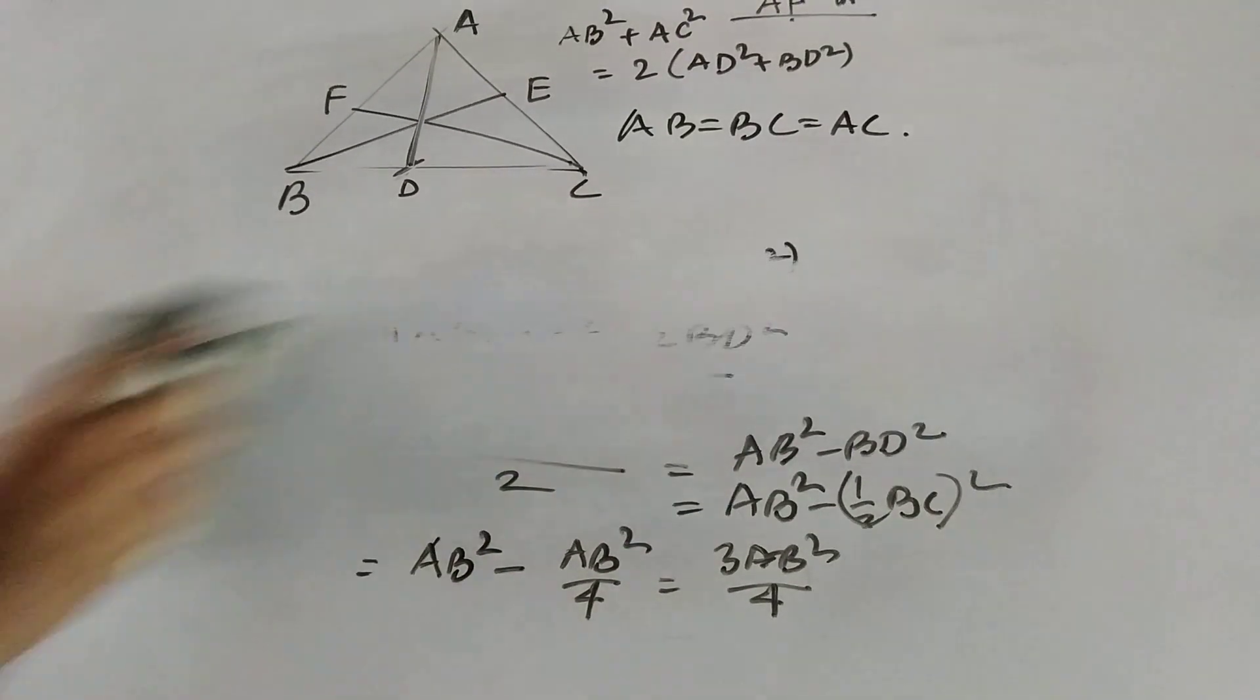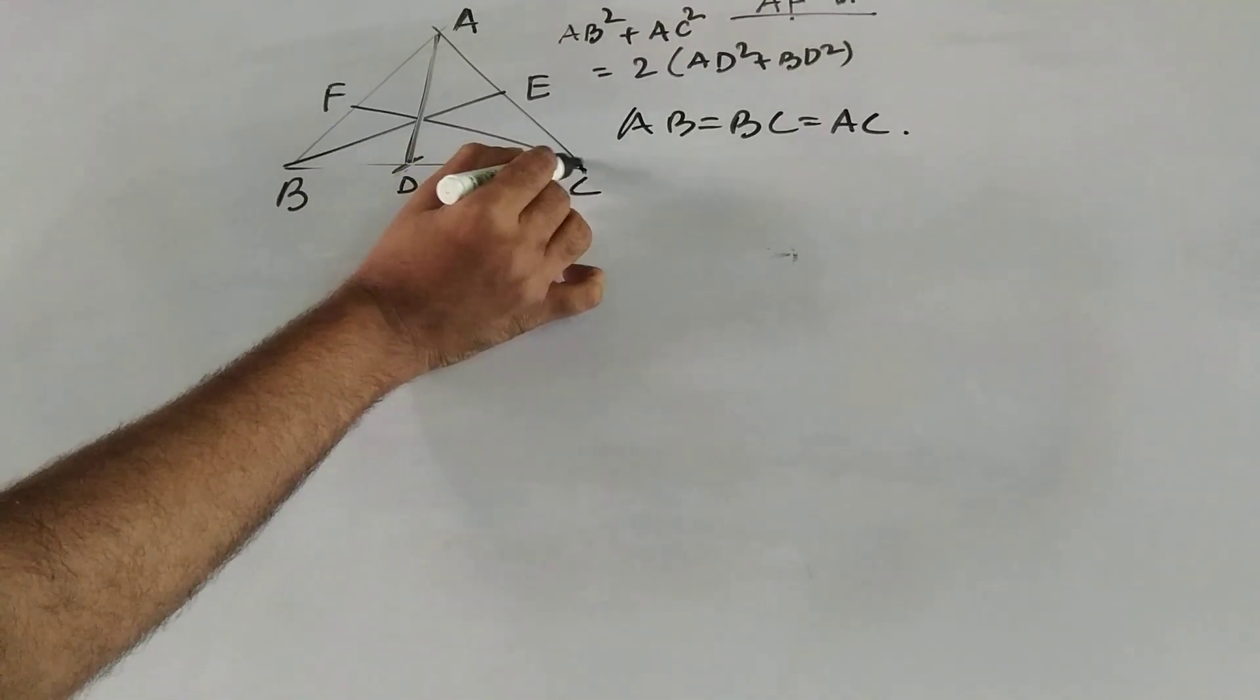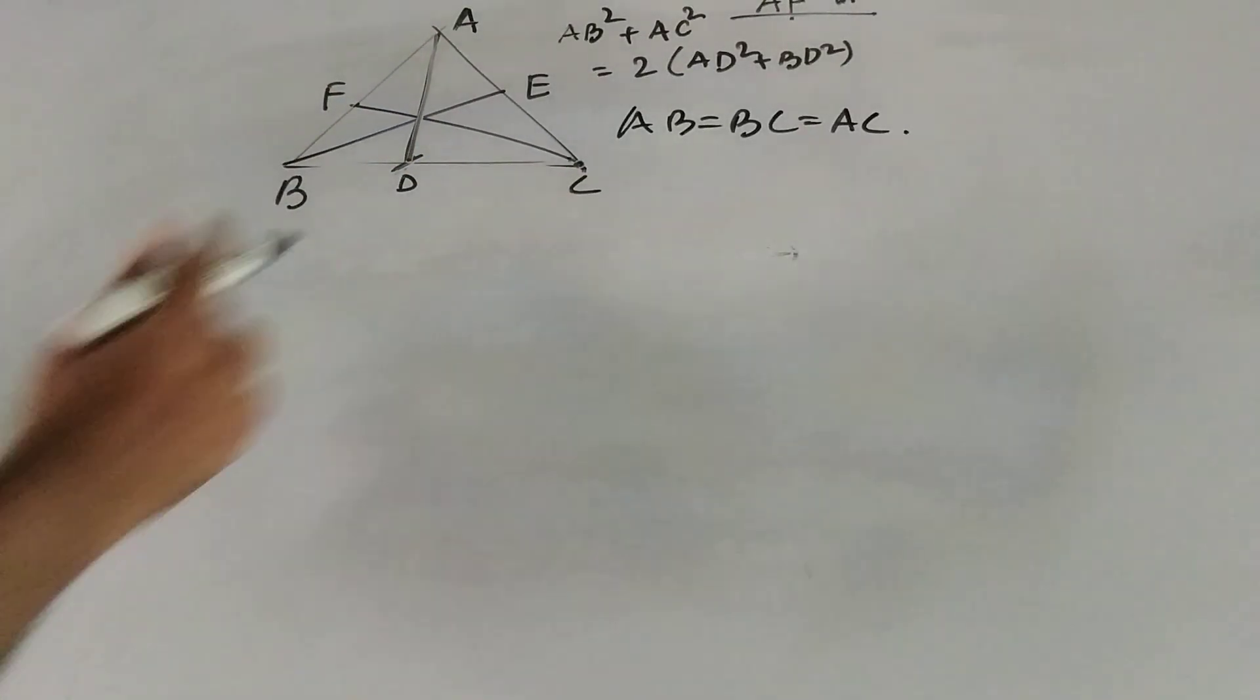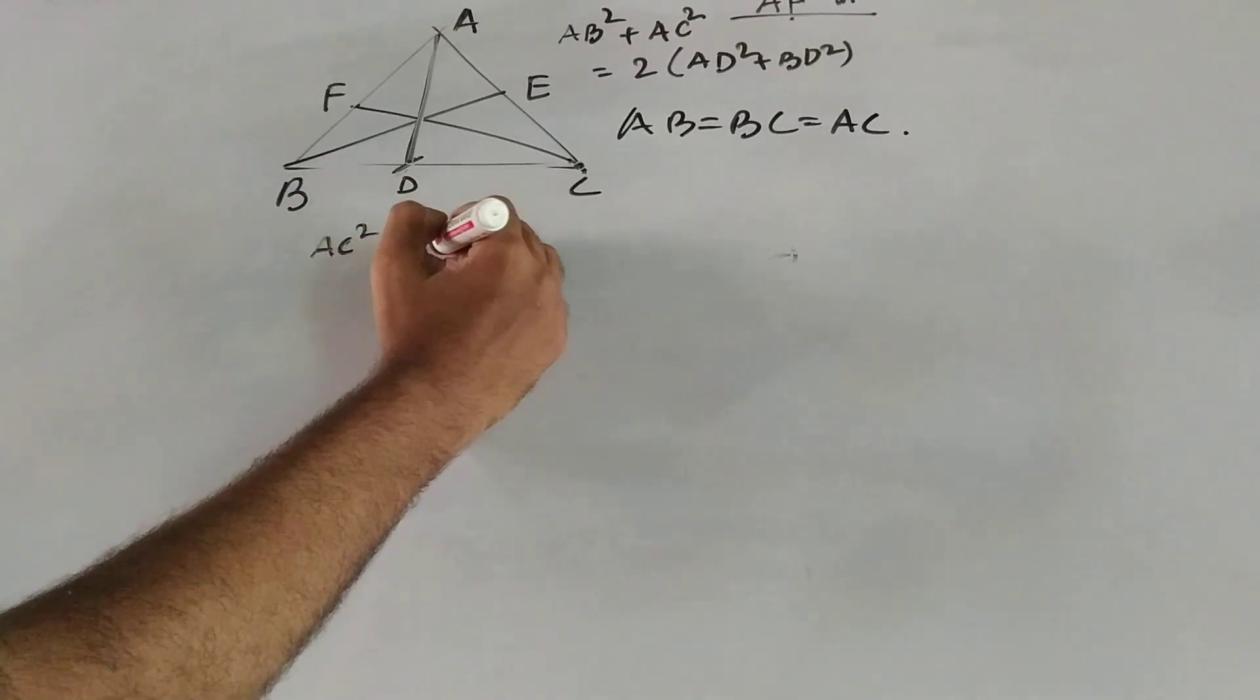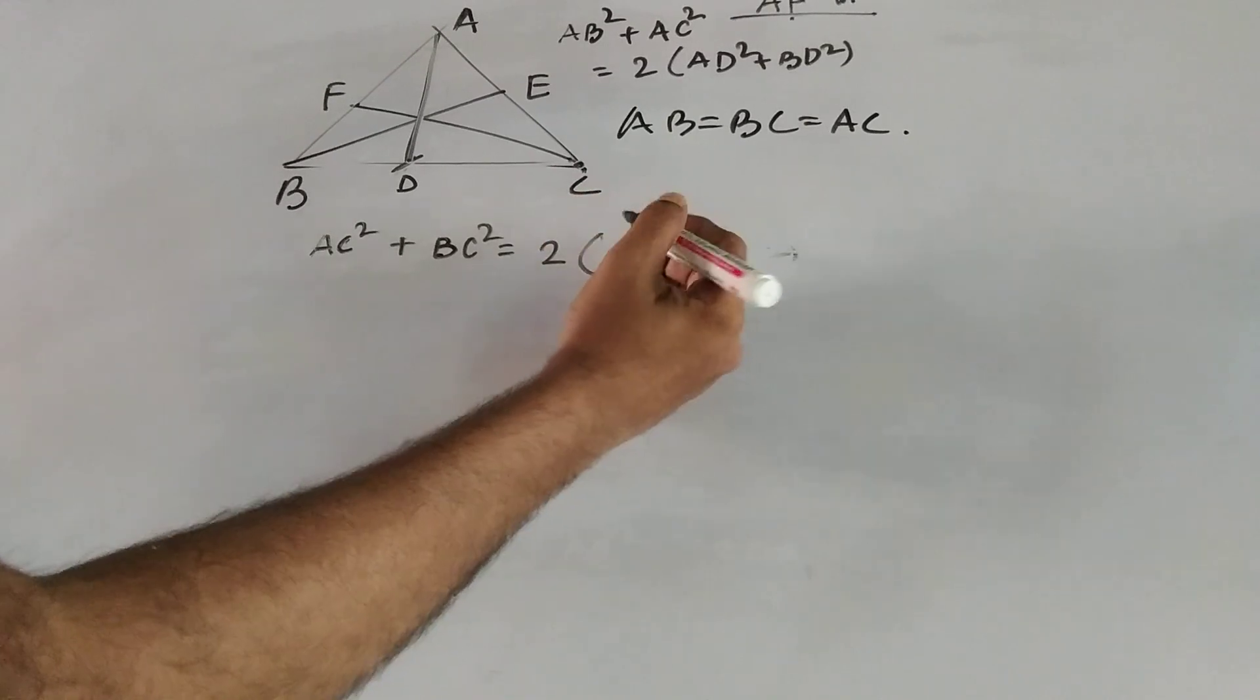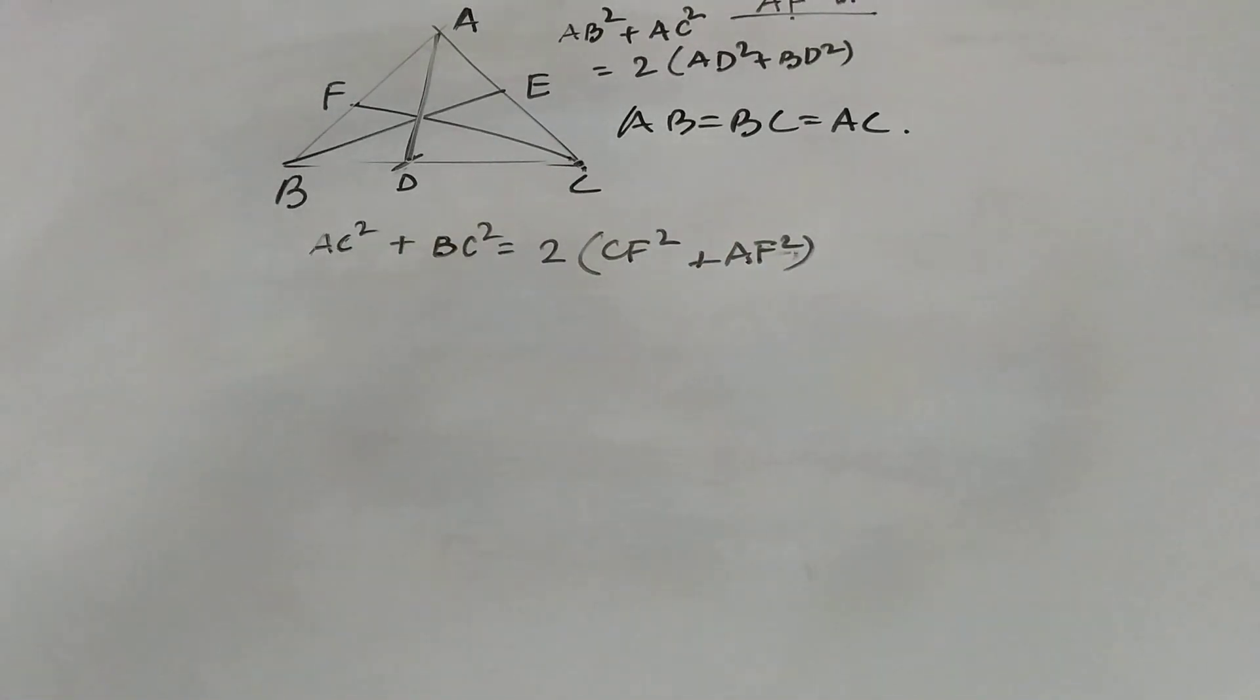So let us consider the other median, for example, let us take the example of CF, where C is the vertex and F is the midpoint of the opposite side AB. Then what will be the formula as per Apollonius theorem? It will be AC square plus BC square equal to 2 into CF square plus AF square. Same formula, only the vertex and the sides got changed.